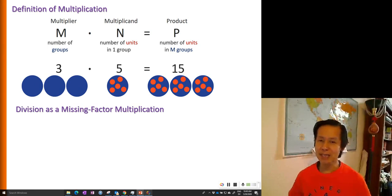Hence, we can see division as a missing factor multiplication. That means we are given a product. We only know one of the two factors. So for example, 28 divided by 4 is equal to a missing factor. So what is the missing factor?